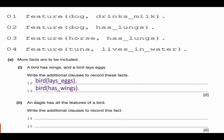So here, an eagle has all the features of a bird. Well, what does a bird do? I look back at my previous answer. A bird lays eggs. A bird has wings. Write the additional clauses to record this fact that an eagle has all the features of a bird. Well, how did they show features? A dog has a feature that it drinks milk. A horse has a feature that it has lungs. It's showing us several examples. So I'm going to use feature.